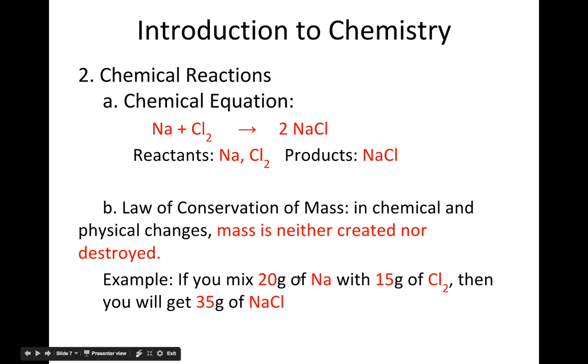So for example, if we mix 20 grams of sodium with 15 grams of chlorine, then you just add them up—it's going to equal 35 grams of NaCl. So here we have two Na's and two Cl's, over here we have two Cl's, and in order to balance the equation...